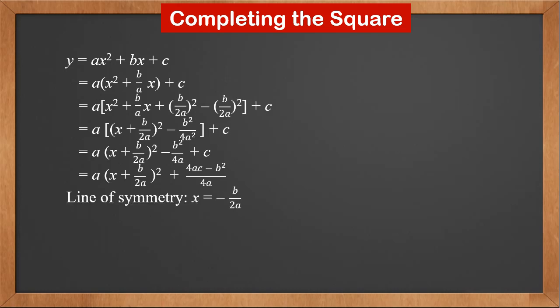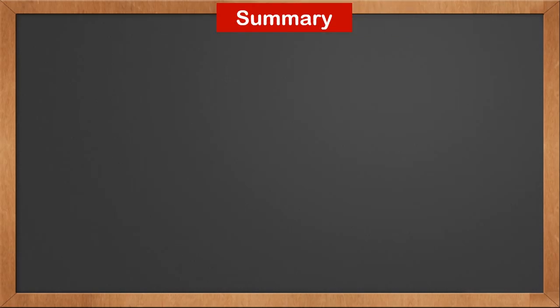From this, we know the line of symmetry of any quadratic function is x = -b/(2a). The vertex is (-b/(2a), (4ac - b²)/(4a)). The minimum or maximum value is (4ac - b²)/(4a).